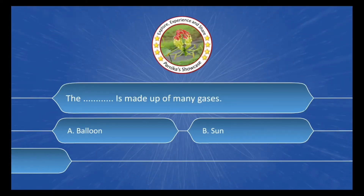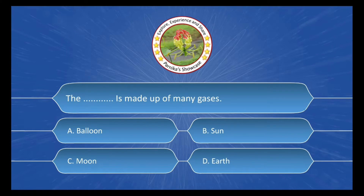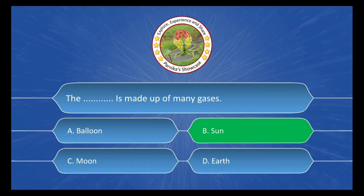The sun is made up of many gases, and the options are: A. Balloon, B. Sun, C. Moon, D. Earth. And the correct answer is Option B. Sun.